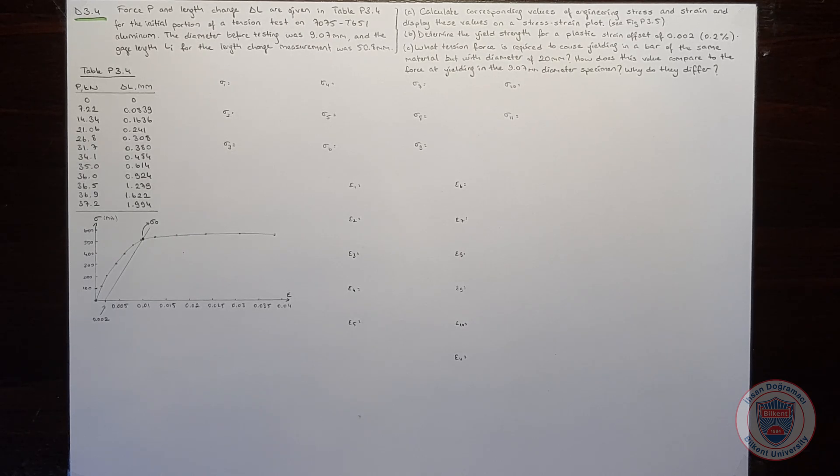In part B, we will determine the yield strength for a plastic strain offset of 0.2%. And finally, in part C, we will determine what tension force is required to cause yielding in a bar with a diameter of 20 millimeters. This bar will be made of the same material, and we will compare this value with the 9.07 millimeter diameter specimen.